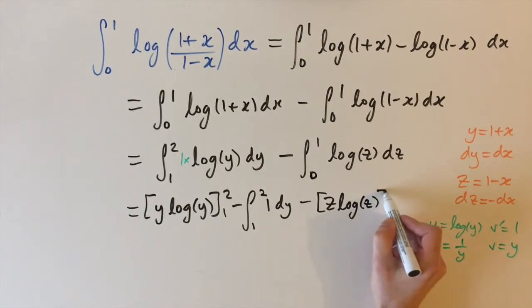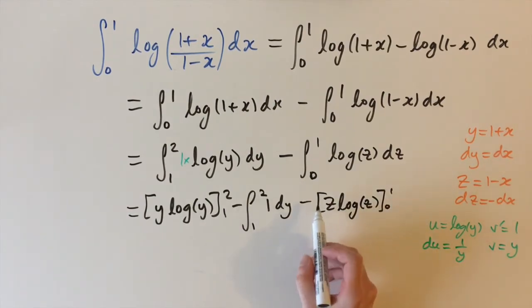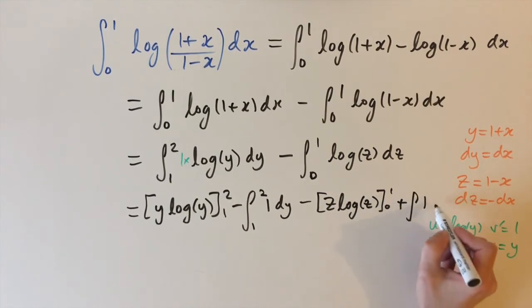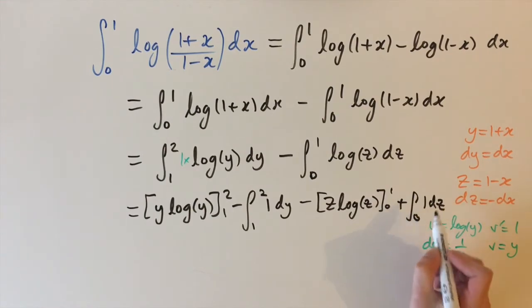And then we'd have minus minus which is double minus so we'd get plus the integral of 1 dz with the limits 0 and 1.